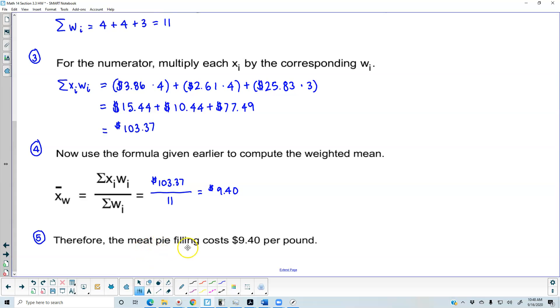Therefore, the meat pie filling costs $9.40 per pound.